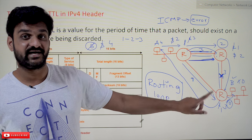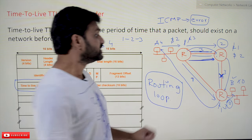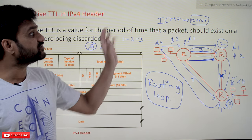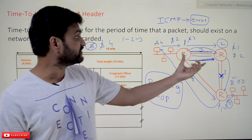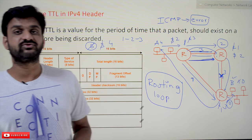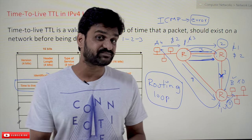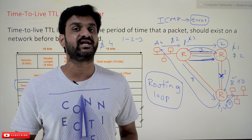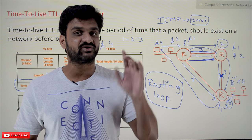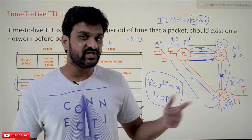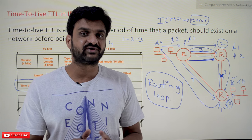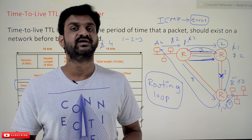So remember: if the TTL value is 0 at the destination, the packet is accepted. If the TTL value is 0 at a router (not the destination), the packet gets discarded. This is how Time to Live helps us avoid the infinite loop or routing loop problem. Thanks for watching. If you haven't subscribed to our channel, please subscribe and press the bell icon for the latest updates. Post any doubts in the comments, give us a like, and share this video with your friends.